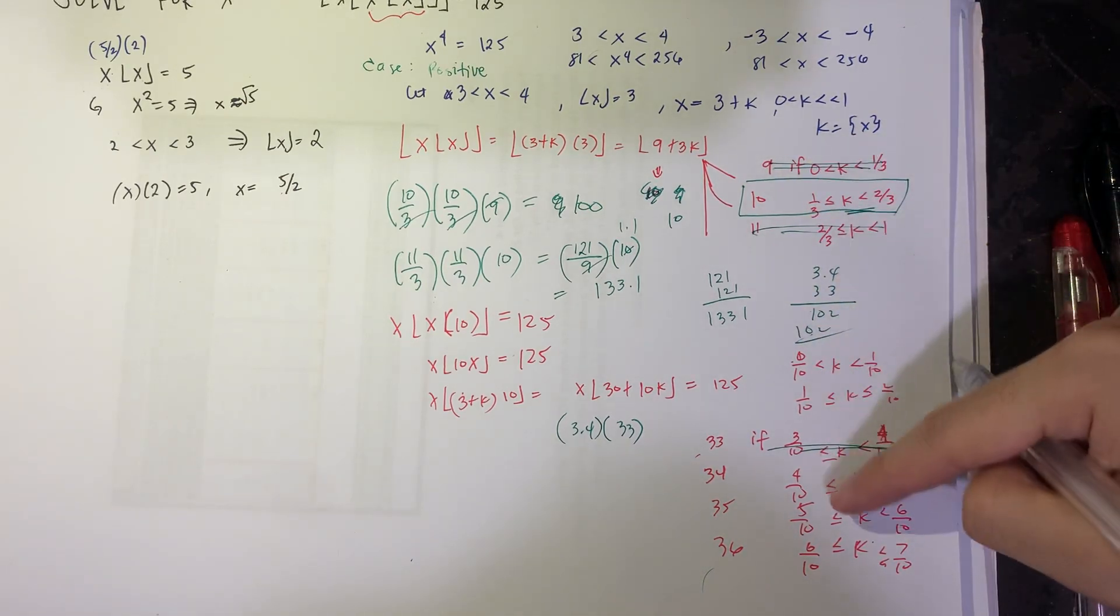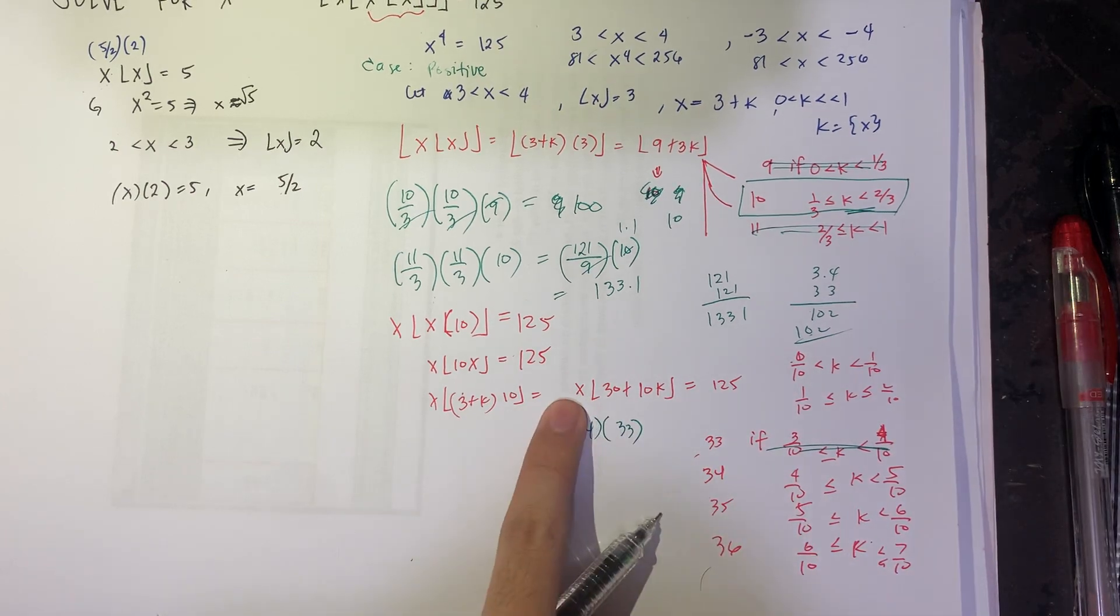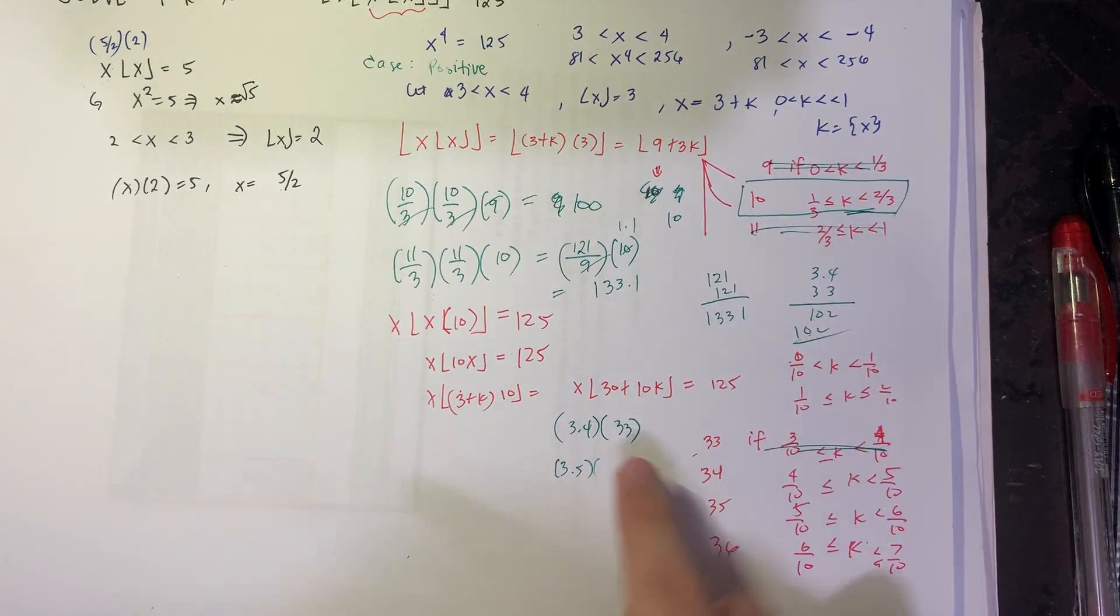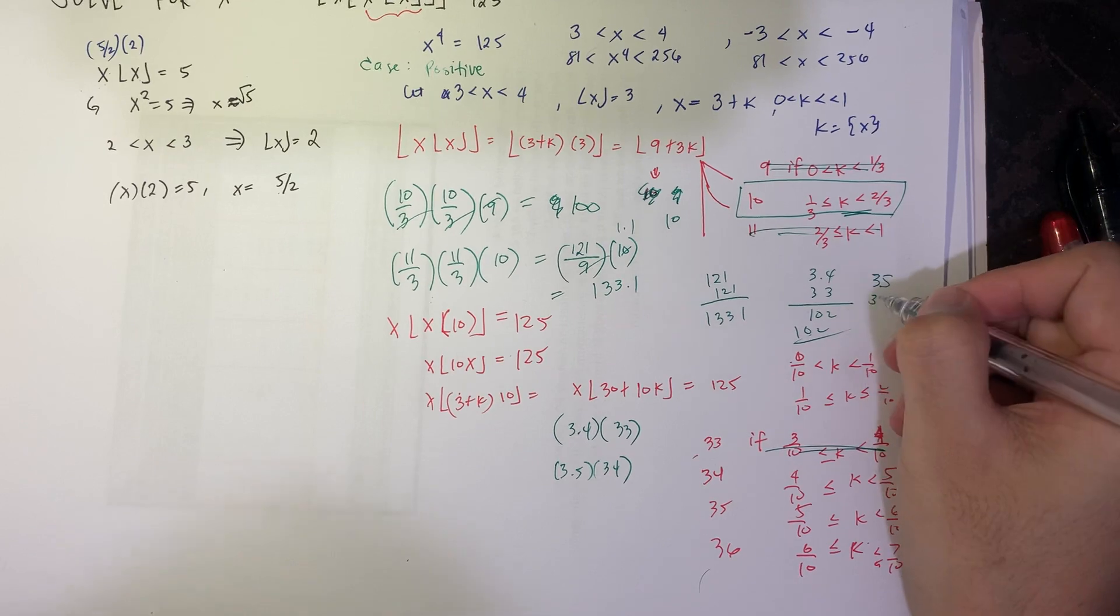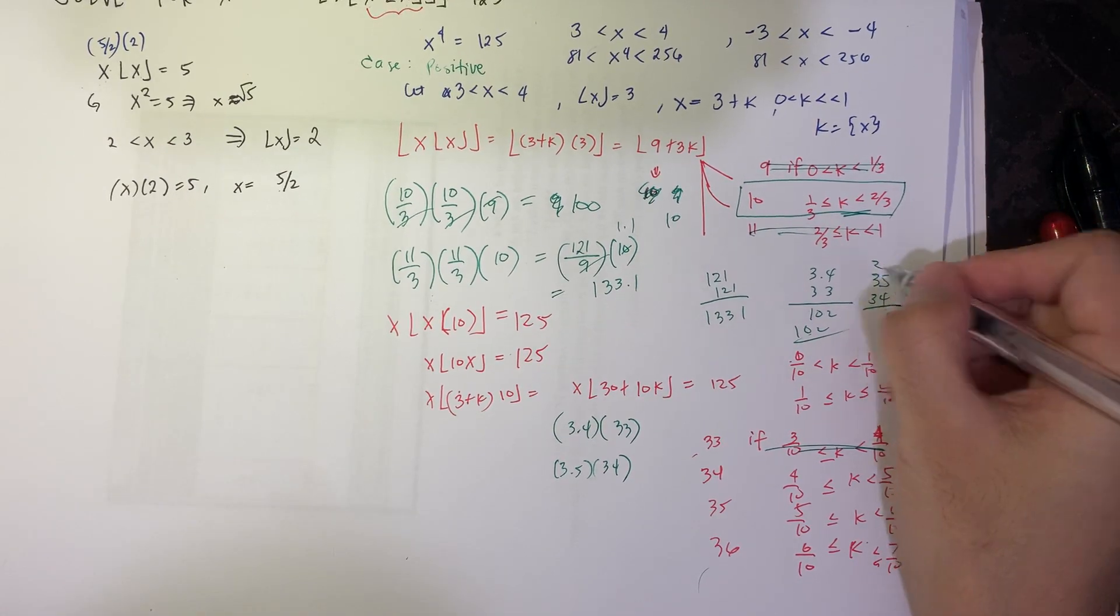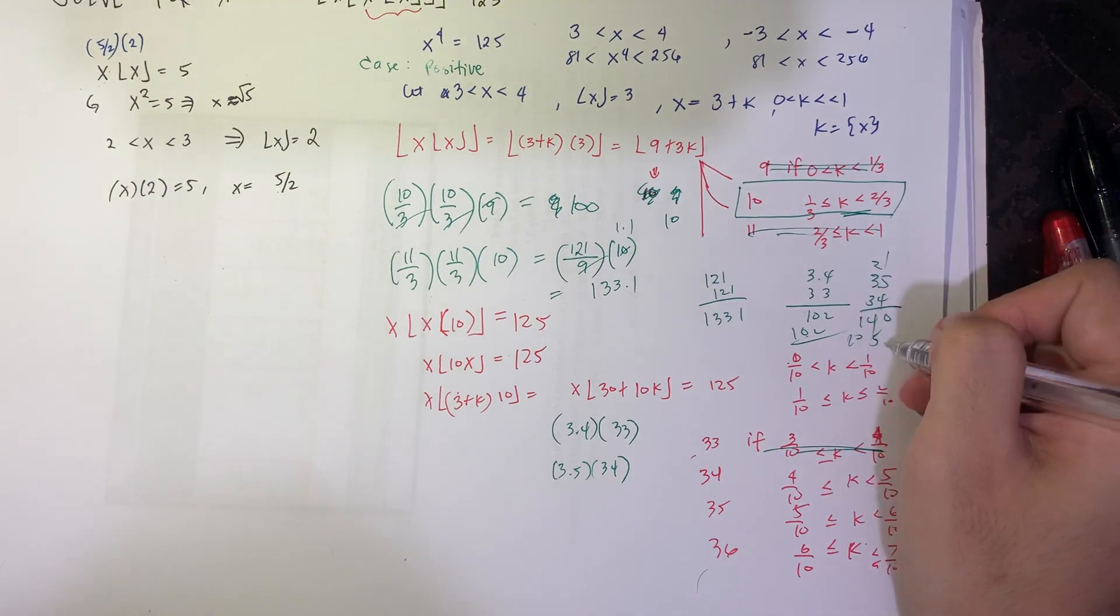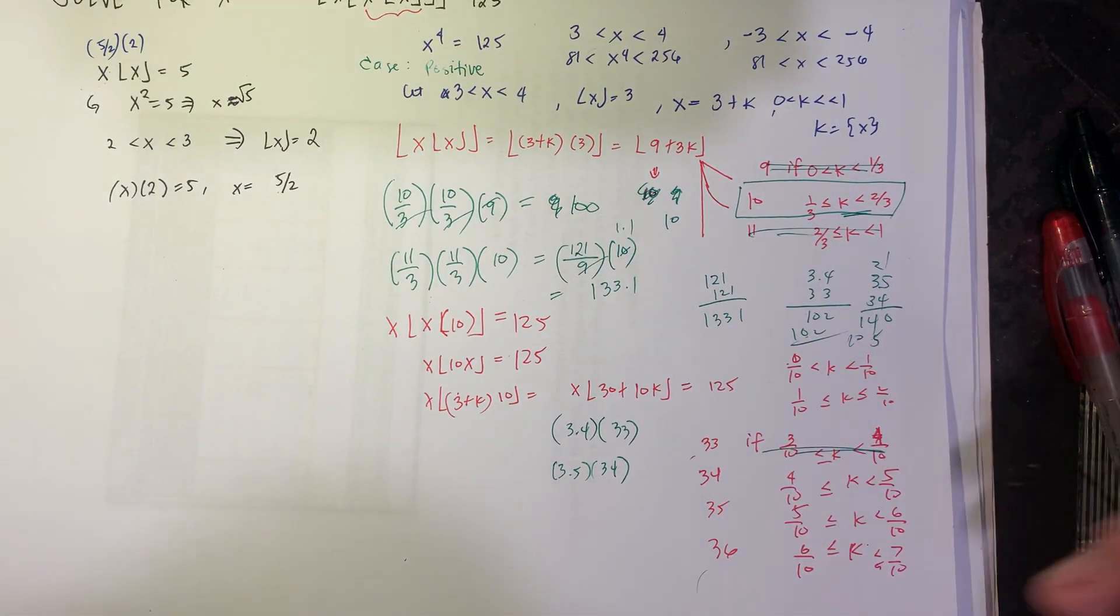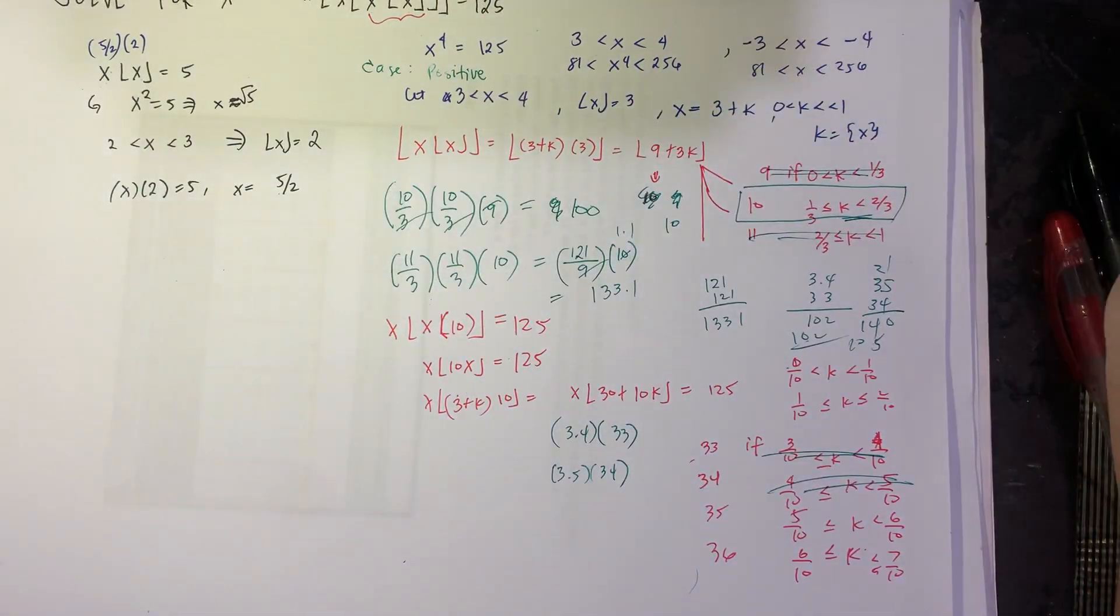If k is between 4 over 10, 5 over 10, this x is at most 3 plus 5 over 10. So it's at most 3.5 times 34. That's 119. We're looking for 125. So that's why it's not the answer.